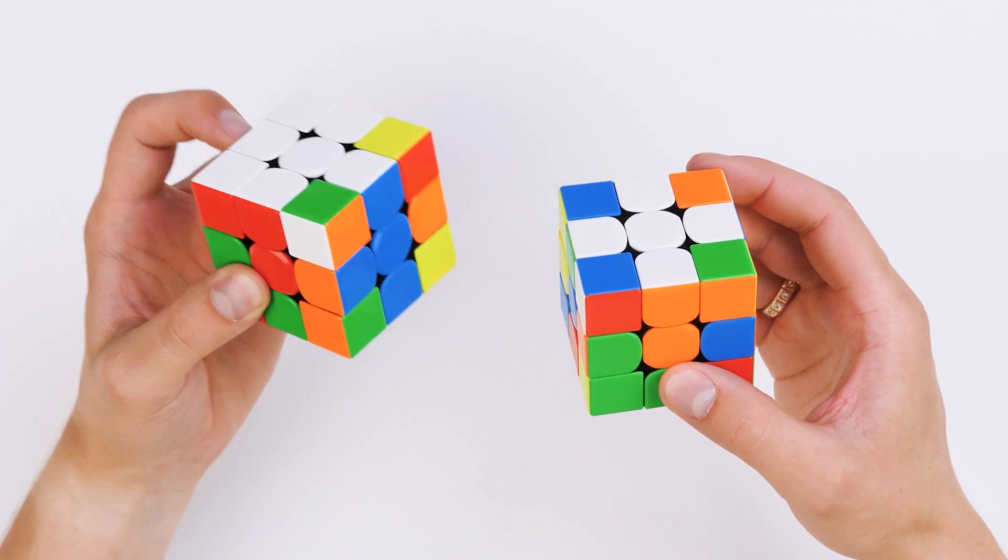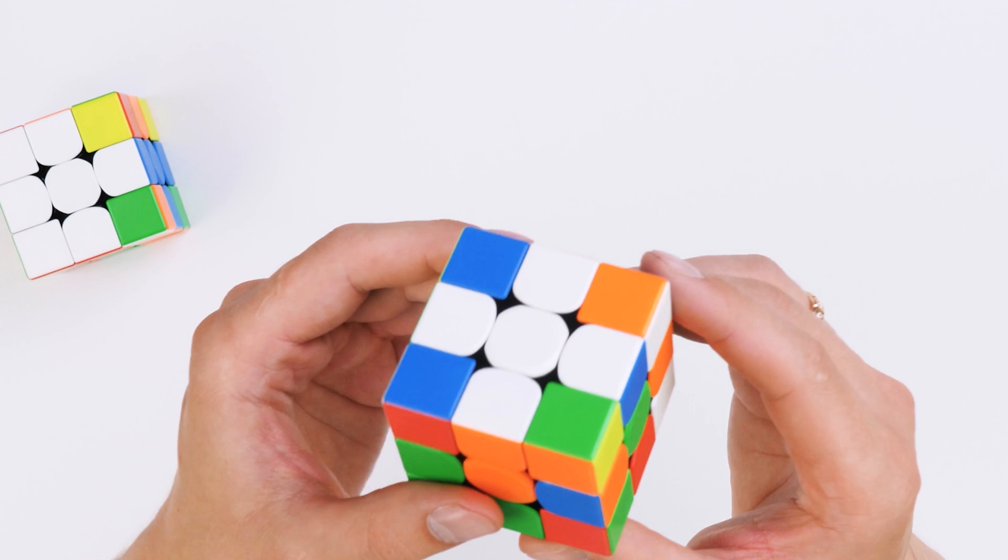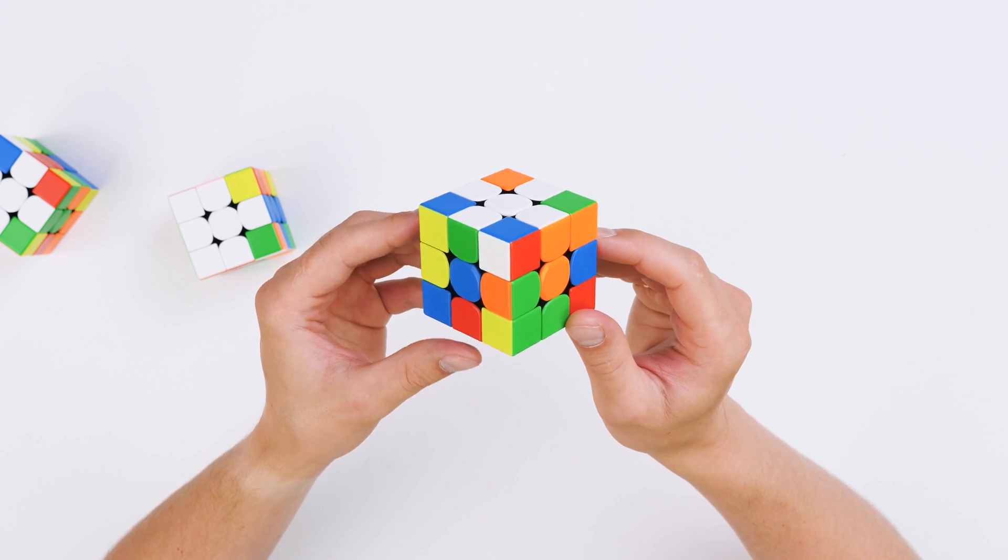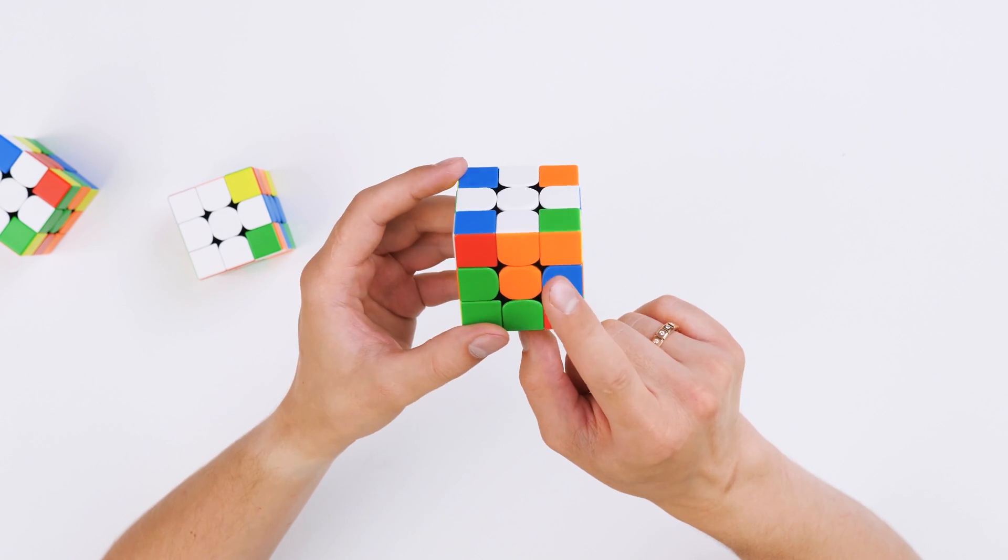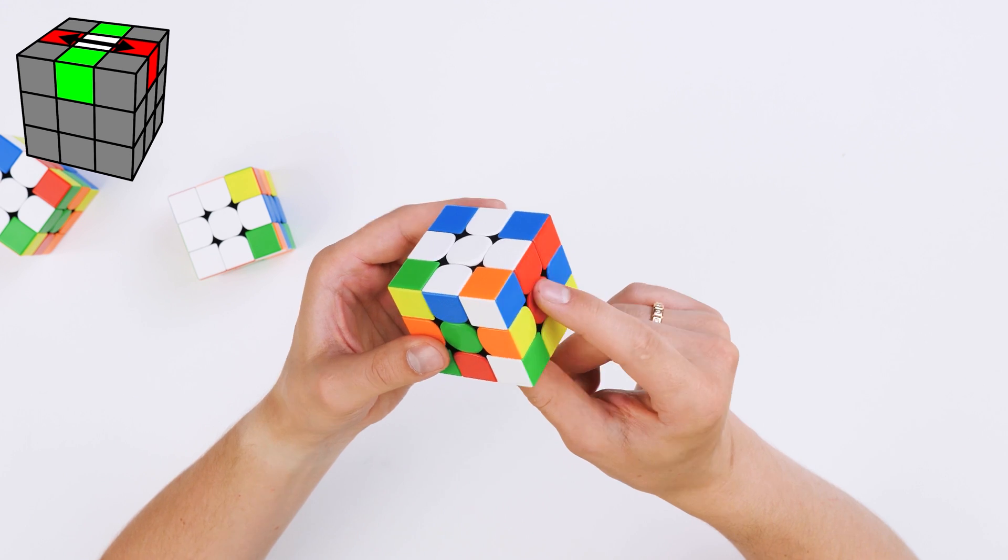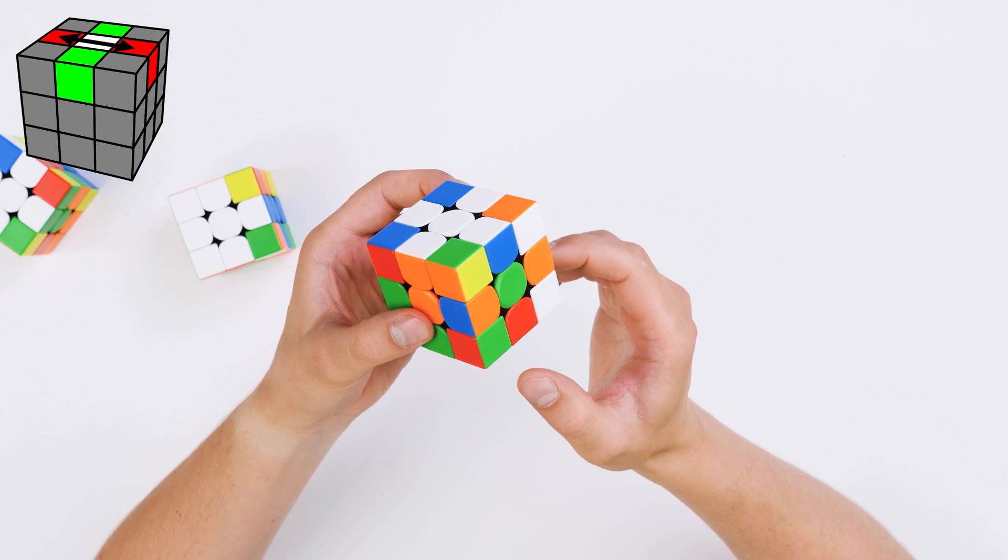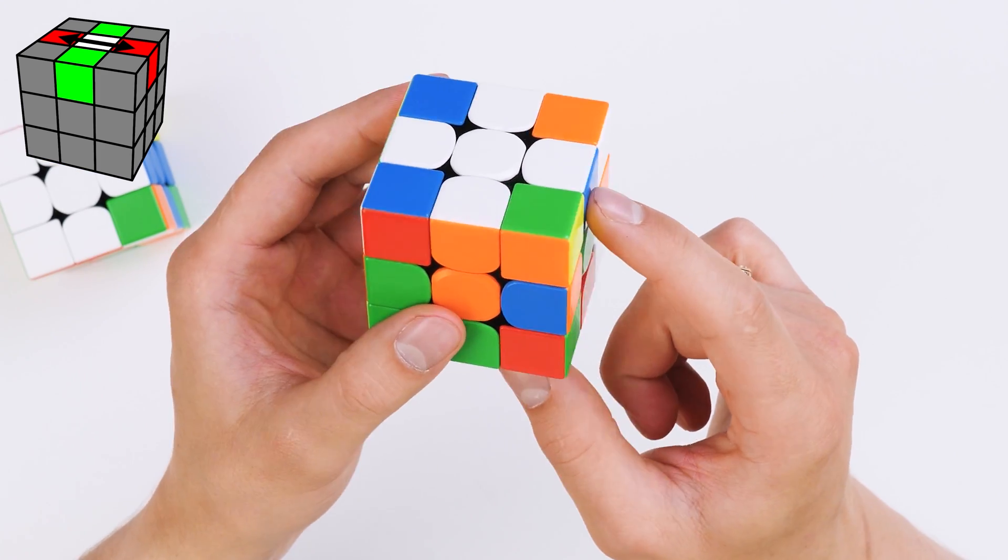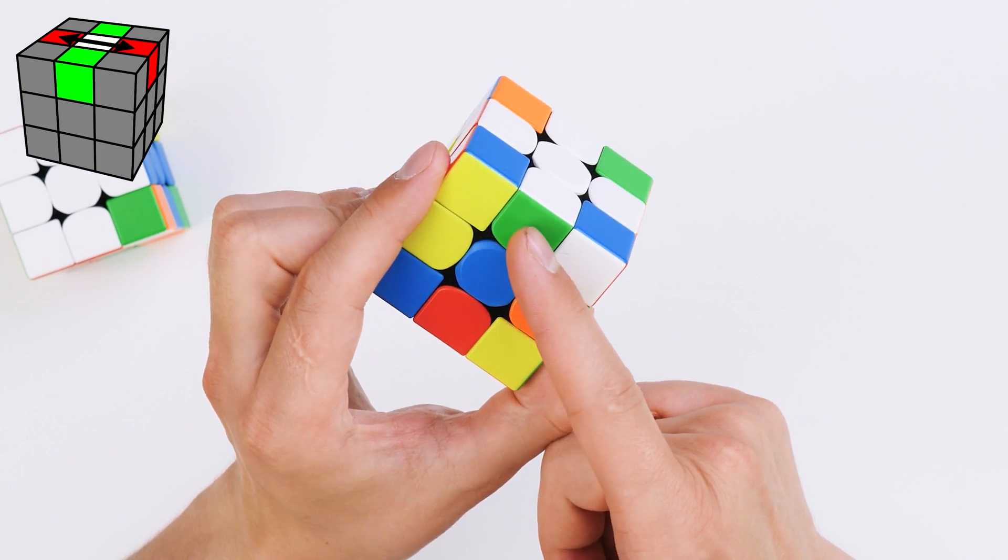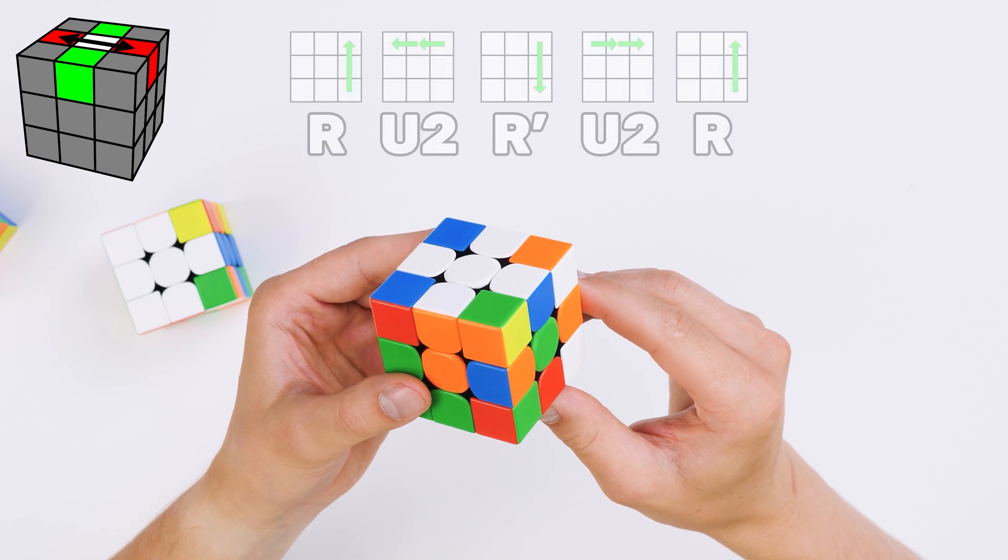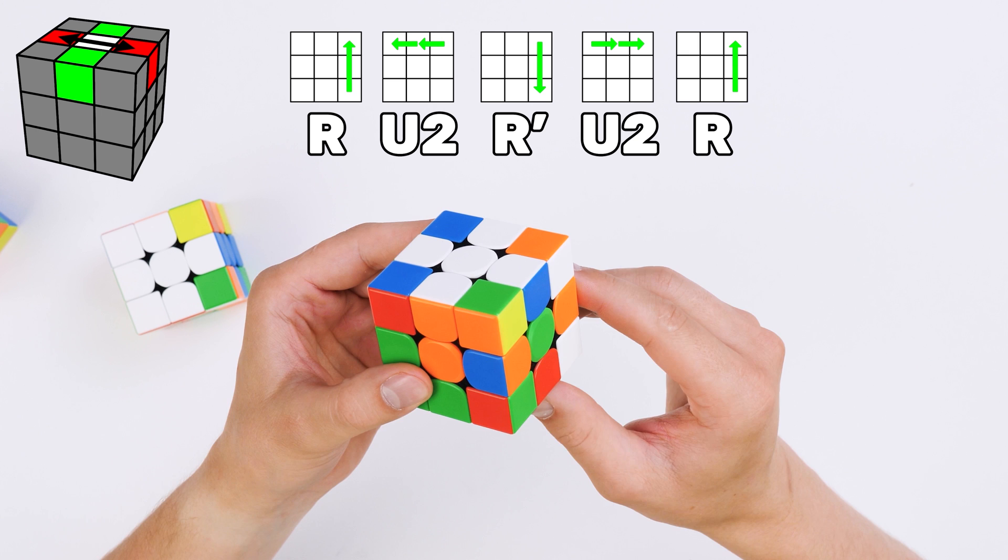The second situation requires a very similar algorithm. In this case, we should hold the cube in front of us, so that the sold edges are in front of us and accordingly behind the cube. We are going to work with the right and left edges. In my case, the blue goes to the blue center and the green goes to the green. And the algorithm will be very similar.